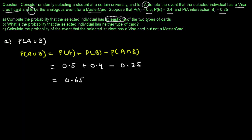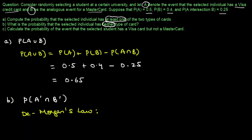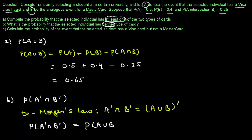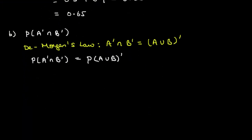In part B, we have to calculate the probability that the selected individual has neither type of card — that means we have to calculate the probability of A complement intersection B complement. We can use De Morgan's law: A complement intersection B complement equals (A union B) complement. So the probability of A complement intersection B complement equals the probability of (A union B) complement.